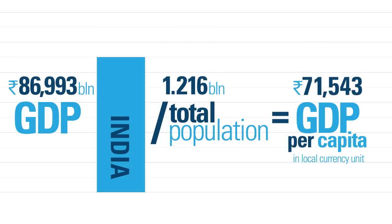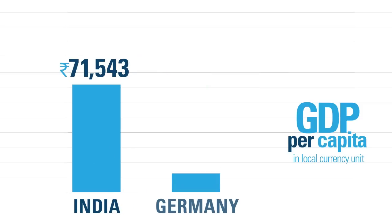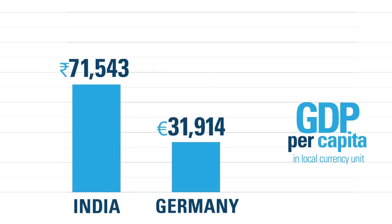This is the GDP per capita of India and Germany, but these bars are not comparable because they're expressed in different currencies — Indian rupee and German euro. In order to compare them, they need to be converted into the same currency, so let's convert them into the US dollar.